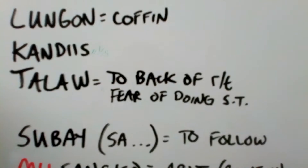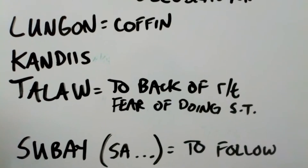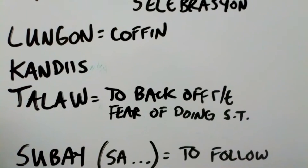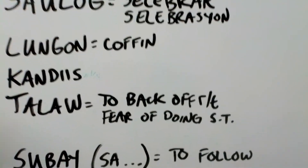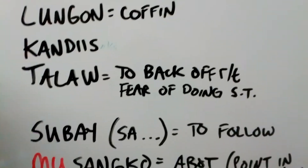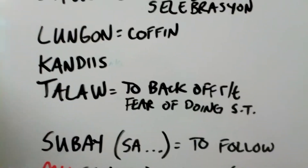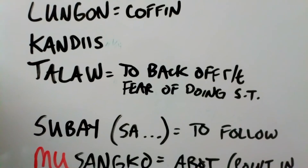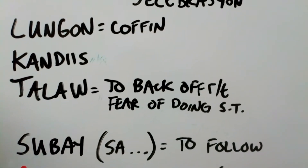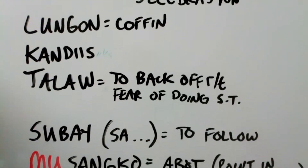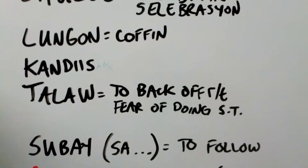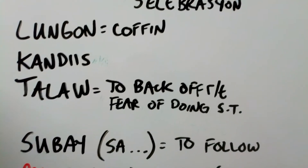This one — talau — is to back off, related to fear of doing something. Talau can be used to describe a situation where somebody is too scared to do something. Talauon is like a coward — you're too cowardly or too scared to do something. A related word is hadlok — hadlokon means to be scared. But talauon is this more specific word. Hadlokon is a related word.